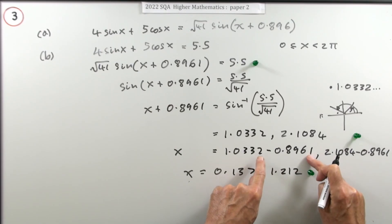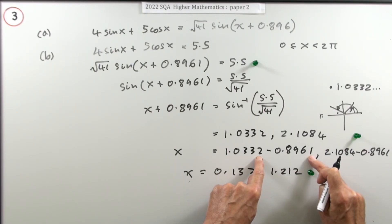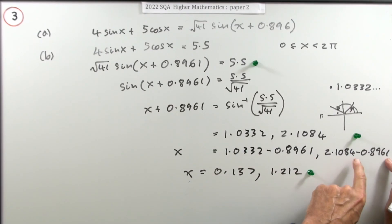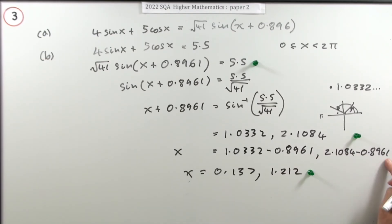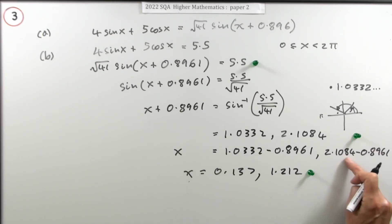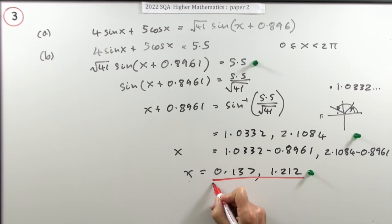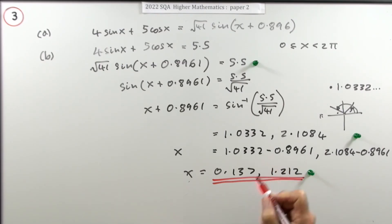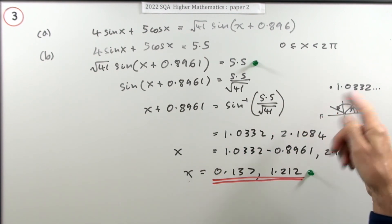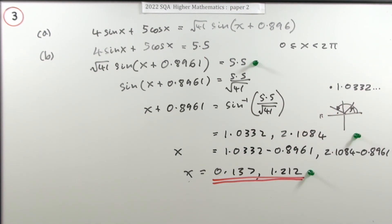It's quite tedious putting down the extra decimal place, but it's strictly speaking what you're meant to do — especially later on at university where rounding errors really do matter. So the key takeaway is: keep one more decimal place in your working than you need in your final answer.